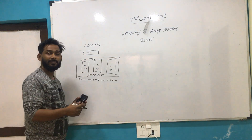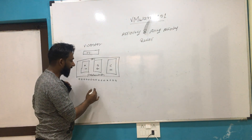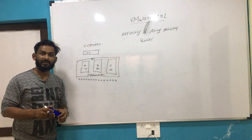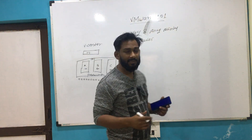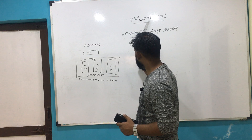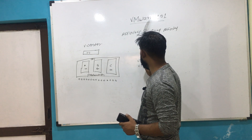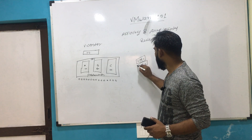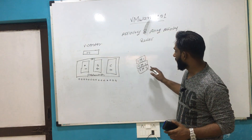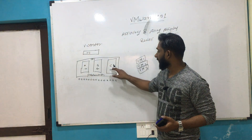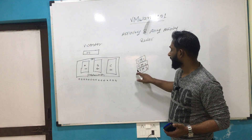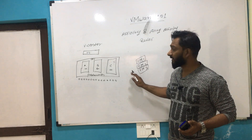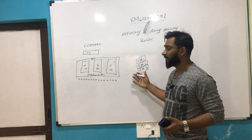DRS handles load balancing and migrates VMs from one host to another. But certain VMs — for example, database cluster VMs, whether Windows or Linux based — the database or application team does not want all three VMs on the same host. If Host C goes down with VM1, VM2, and VM3 all running on it, all three VMs shut down or restart, causing downtime.